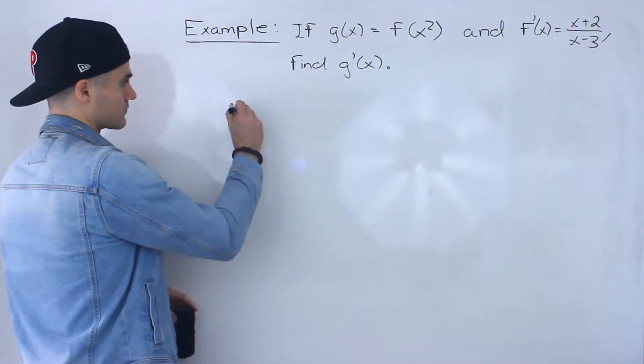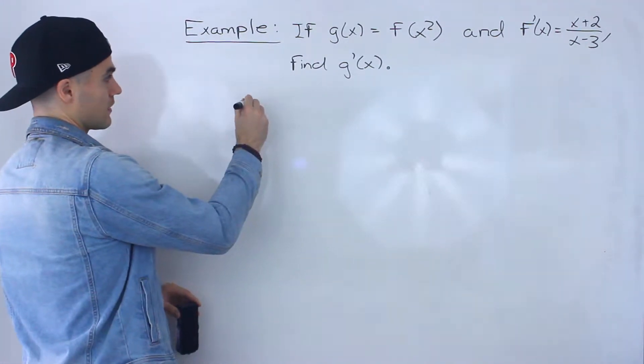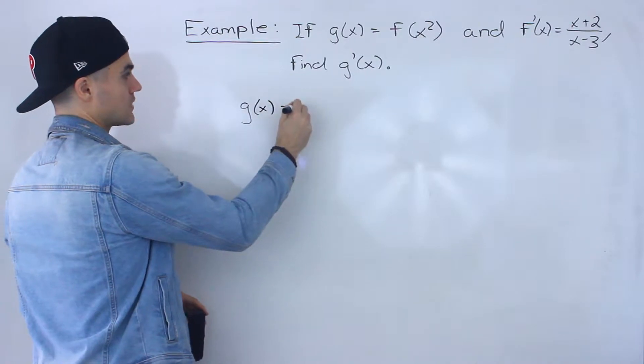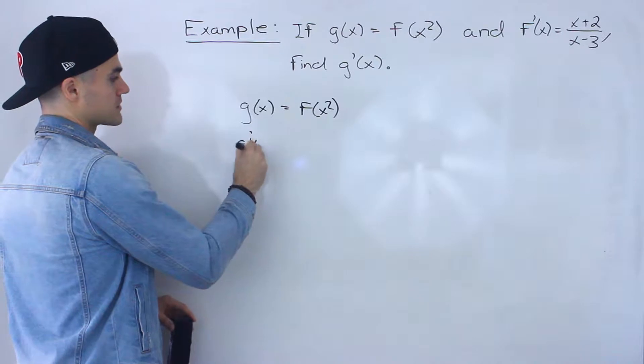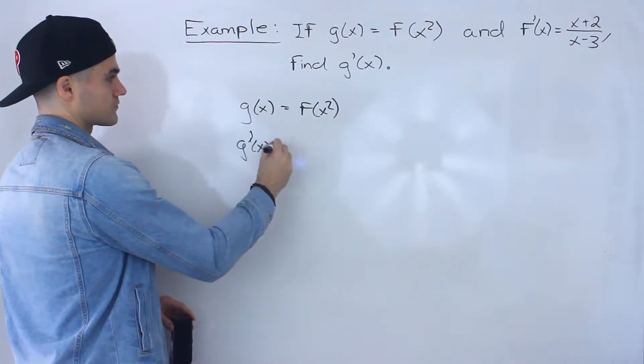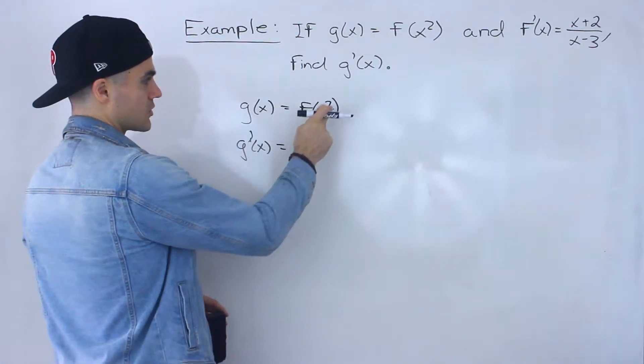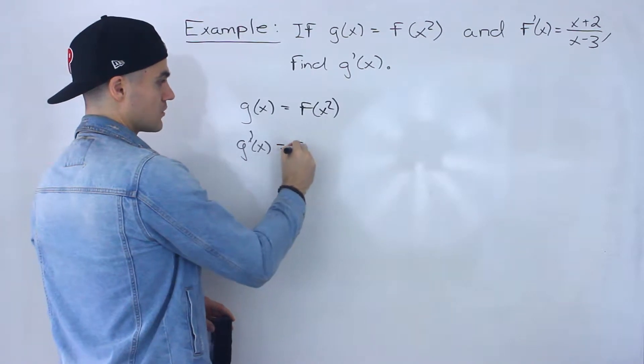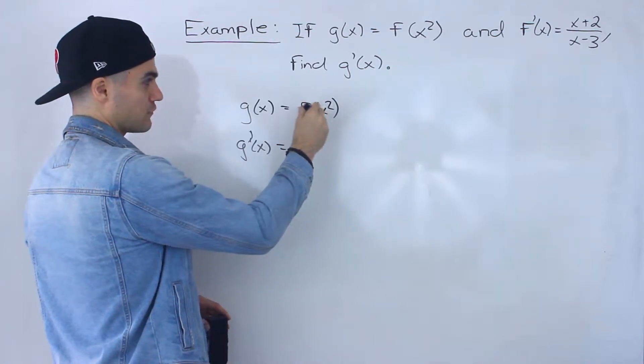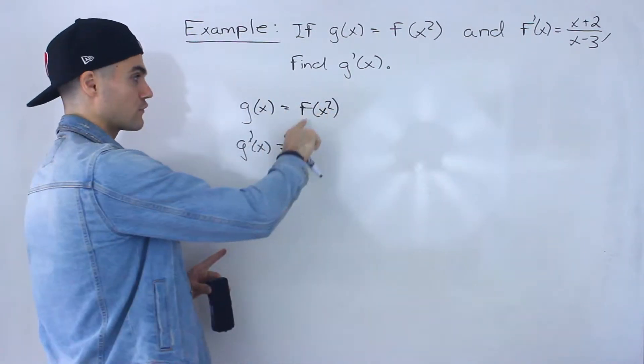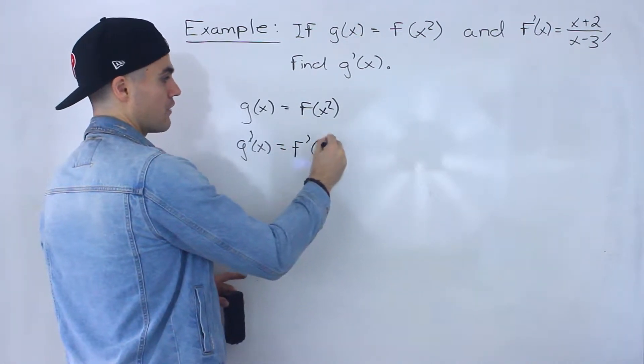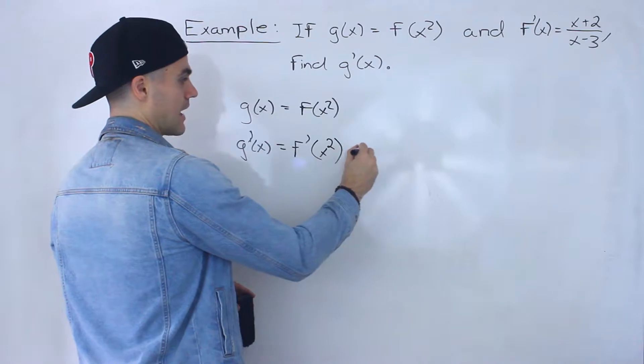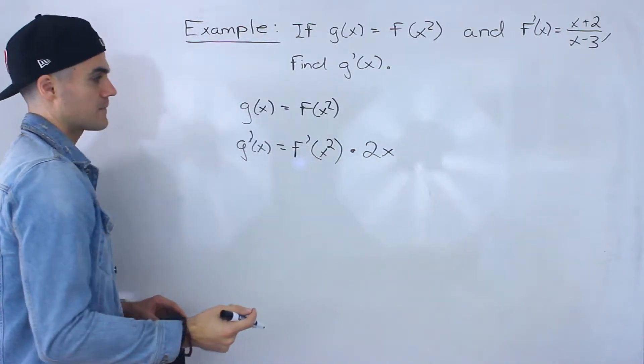So the way you want to do this here is if we have g of x equals f of x squared like this, then what's g prime of x going to be? Well, it's going to be the derivative of this. So notice we have to use the chain rule because we have a function x squared within another function f. So it will be f prime of x squared times 2x like that.